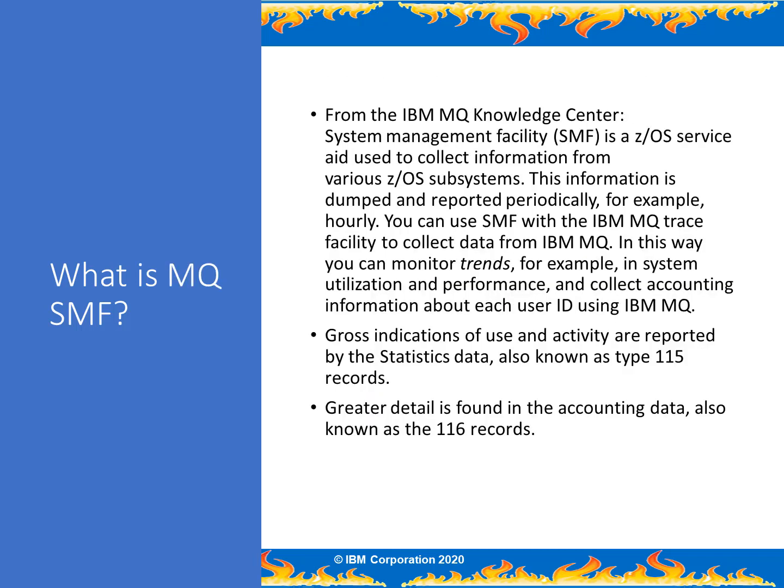I've quoted here from the MQ Knowledge Center. What's really important for everyone to know is that MQ statistics records are at the QManager and Channel Initiator address space levels, giving a high-level view into resource use and the operations of the two address spaces. This includes overall counts of requests, use of storage, internal tasks, etc. The MQ task accounting records are details about applications' use of MQ and the resources, like requests against specific queues used by these tasks. The MQ channel accounting records are the details of how a channel from sender to receiver to server connections are used.